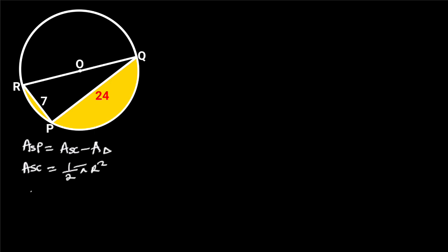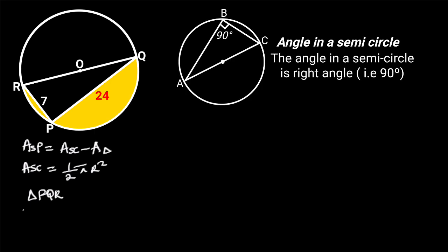To find the radius of the semicircle, let's focus on triangle PQR. In triangle PQR, angle RPQ is equal to 90 degrees. The reason comes from the circle theorem of angle in a semicircle, which states that the angle in a semicircle is a right angle, that is 90 degrees. This follows that triangle PQR is a right triangle.